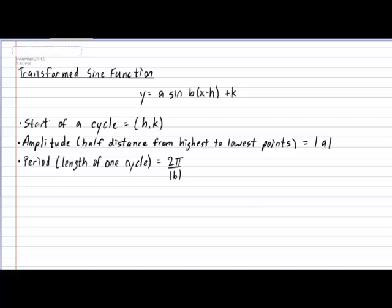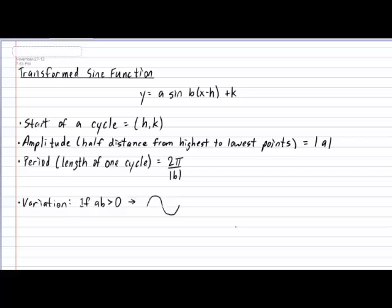The next element we can identify is the variation. If the product of a and b is positive, the cycle will start with a hump and end with a dip. If, however, the product of a and b is negative, then the cycle will begin with a dip and end with a hump.